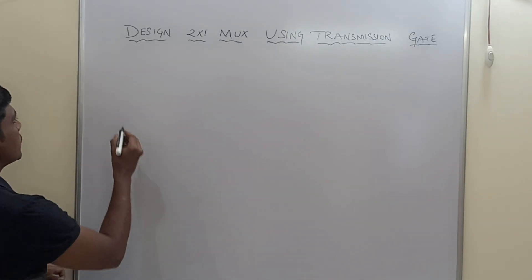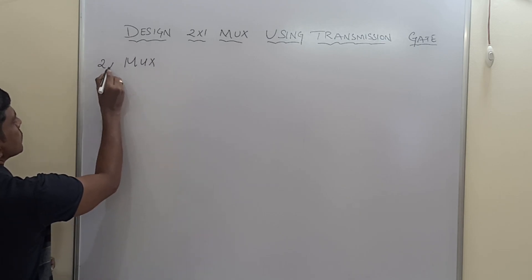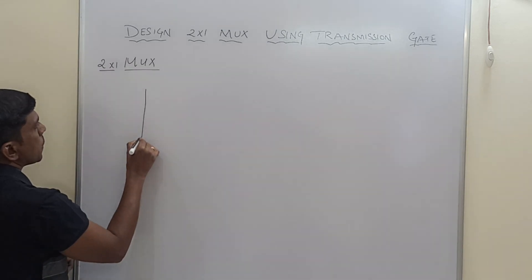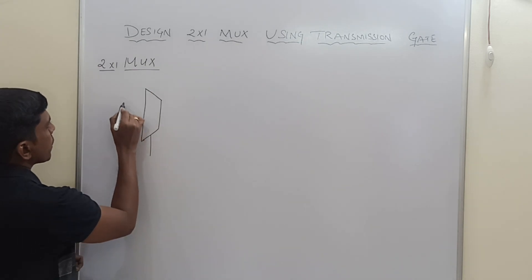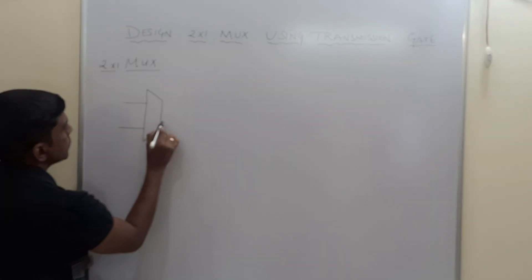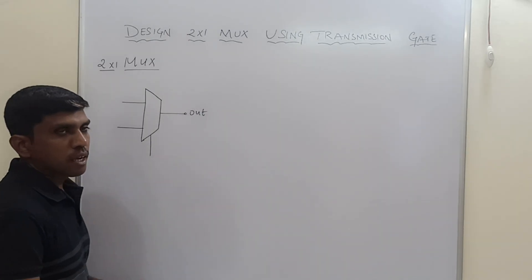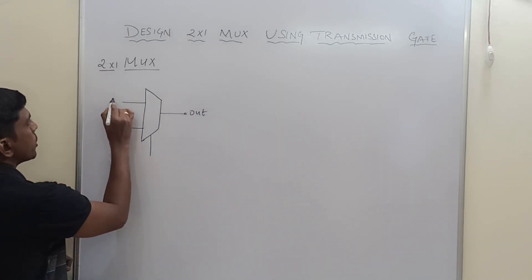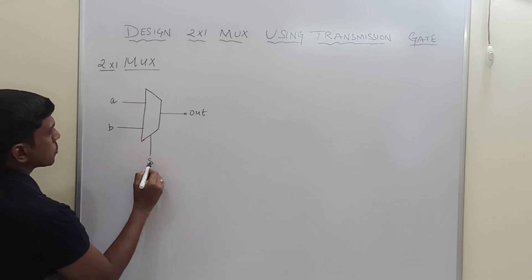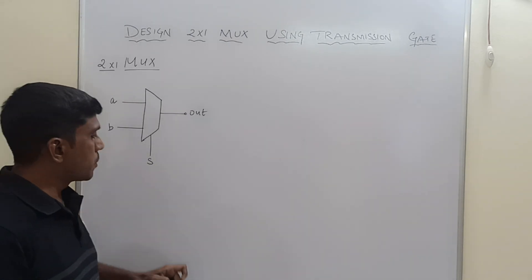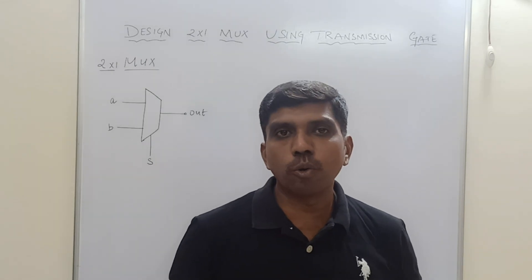First I will draw the block diagram of a 2-to-1 multiplexer. It is a simple block diagram. It has 2 inputs and 1 output, called 'out'. The input variables are A and B. S represents the selection line. This is the simple structure of a multiplexer — a many-input to 1-output circuit.